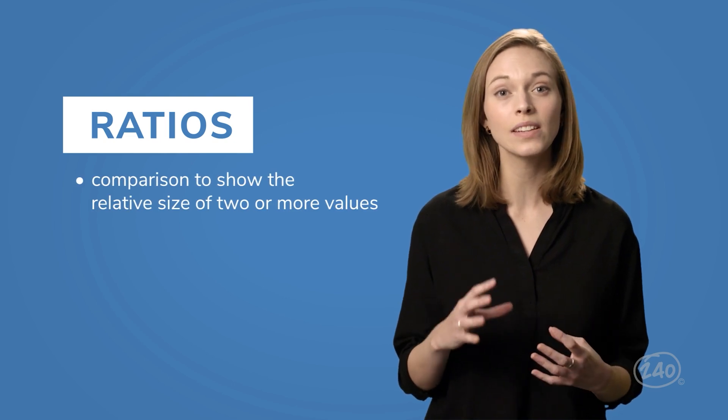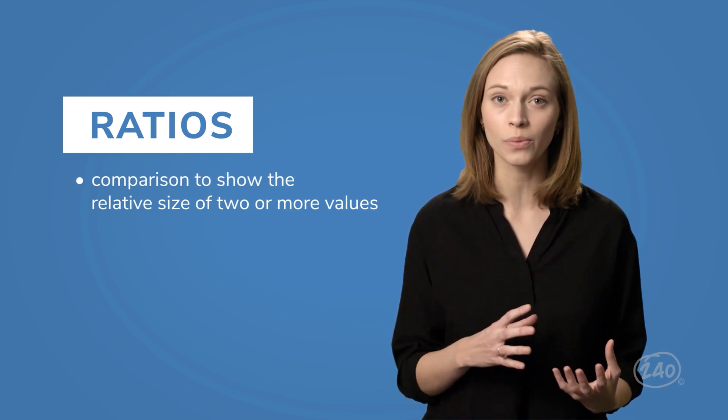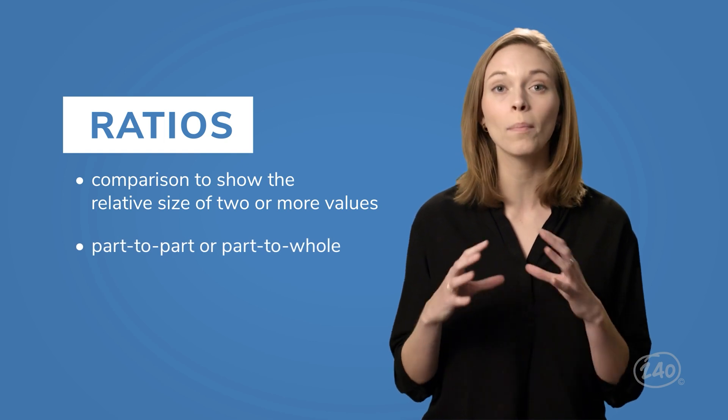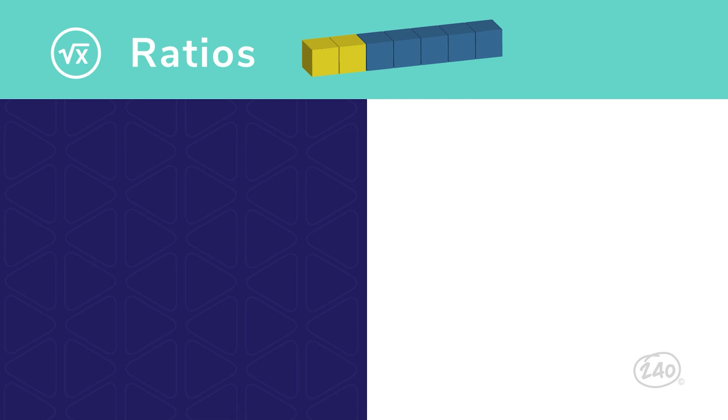Let's check out one of our super helpful videos. Let's look closer at ratios. A ratio is a comparison that shows the relative size of two or more values. A ratio can be a part-to-part comparison or a part-to-whole comparison. Suppose there are two yellow blocks and five blue blocks. We can write the ratio in several part-to-part ways, with a colon, with the word two, or as a fraction.